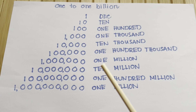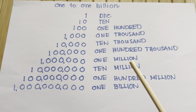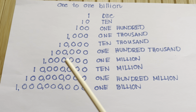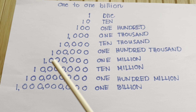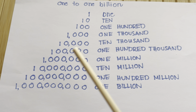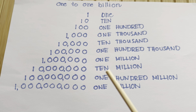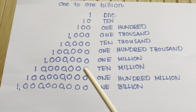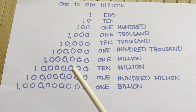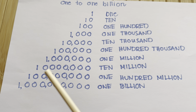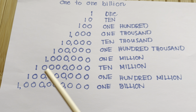In one million, we have one, two, three, four, five, six zeros. In ten million, we have one, two, three, four, five, six, seven zeros.